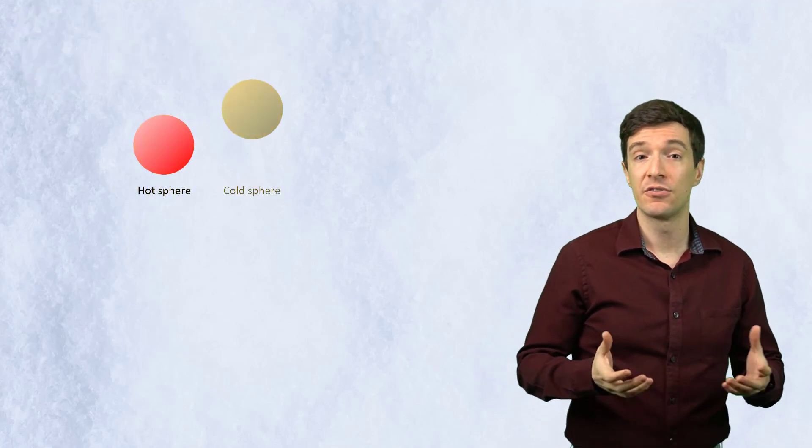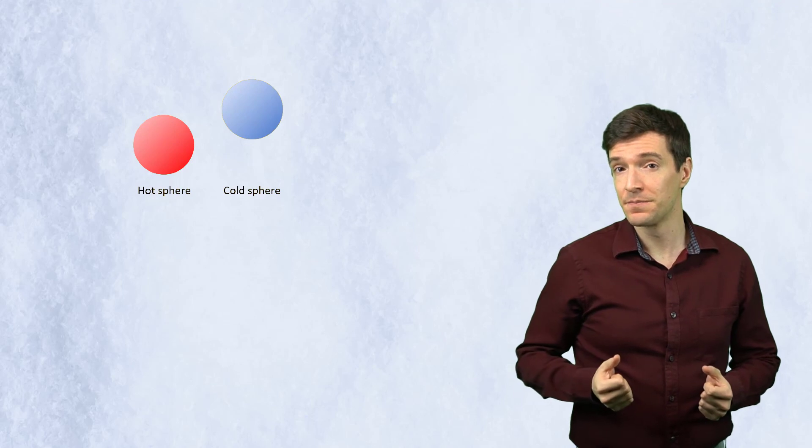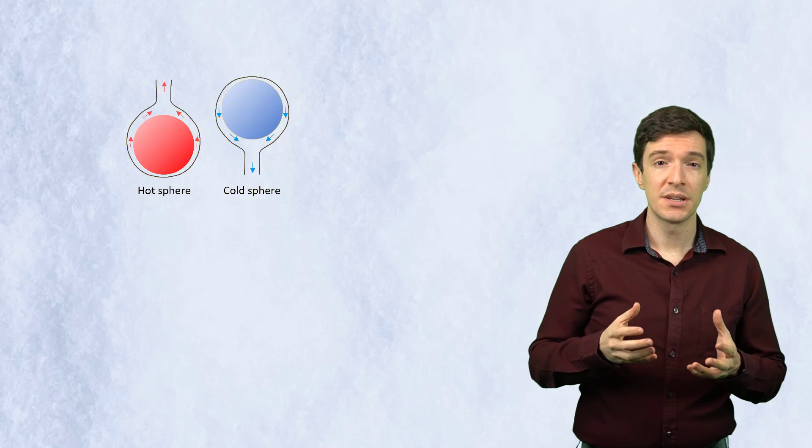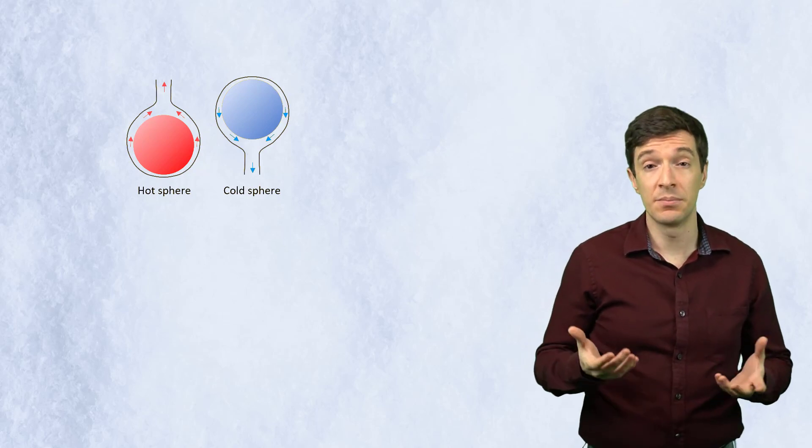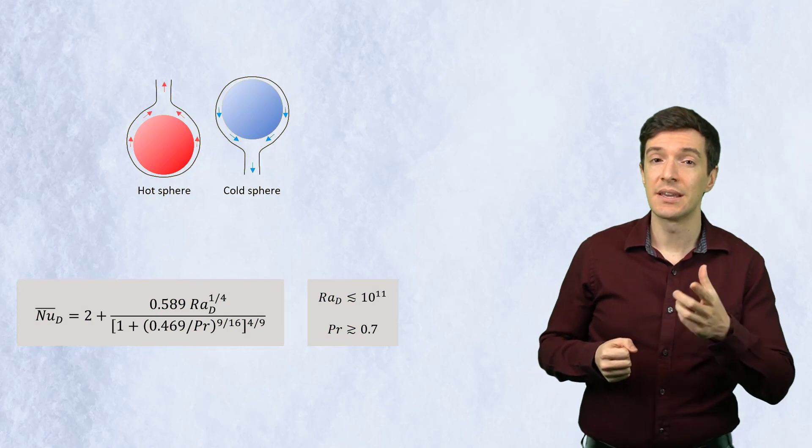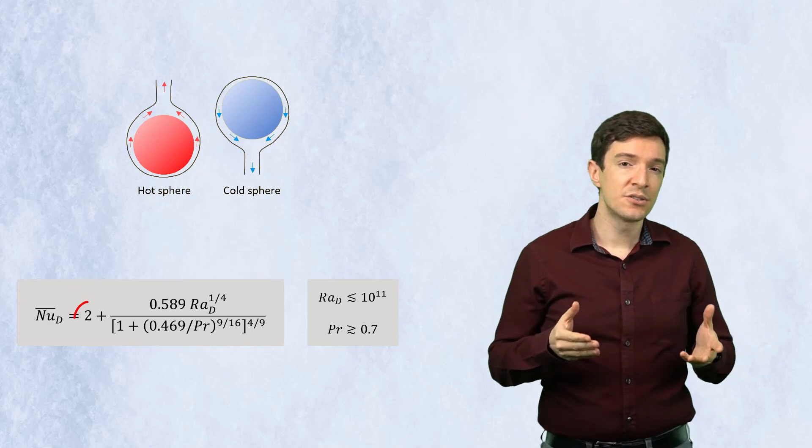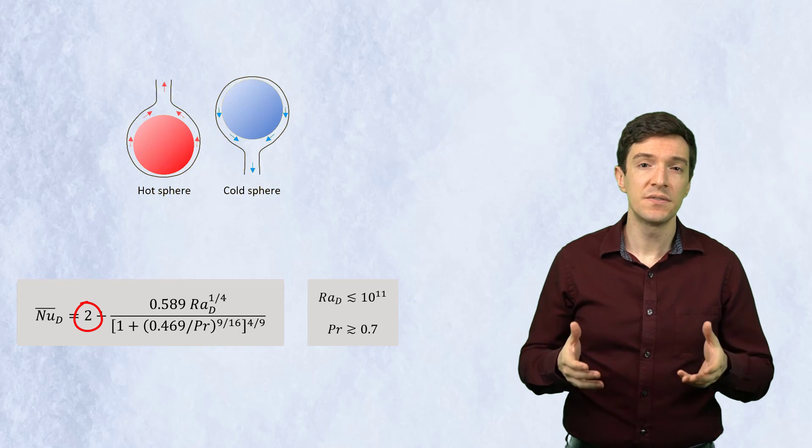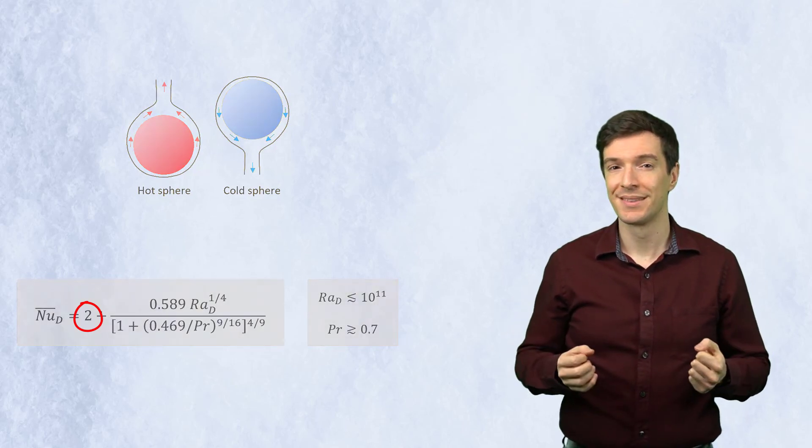Last, the sphere. A pattern like the one seen in the section of a cylinder can be seen for the hot or cold spheres. The fluid moves around the sphere and then transforms into an ascending or descending plume. This correlation can be used for the heat transfer analysis. The constant 2 corresponds to the heat transfer due to conduction for a sphere in an infinite medium. This concludes this lesson on external natural convection.